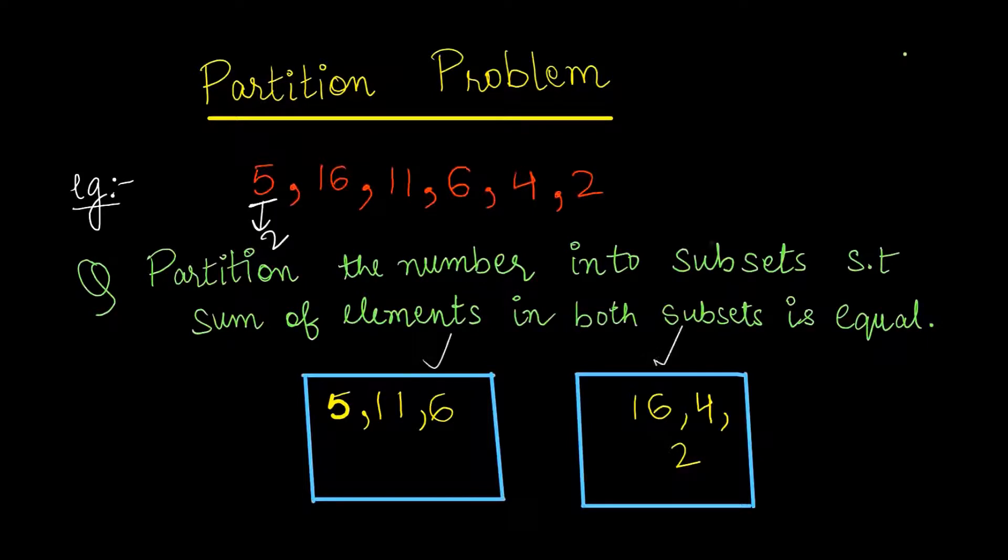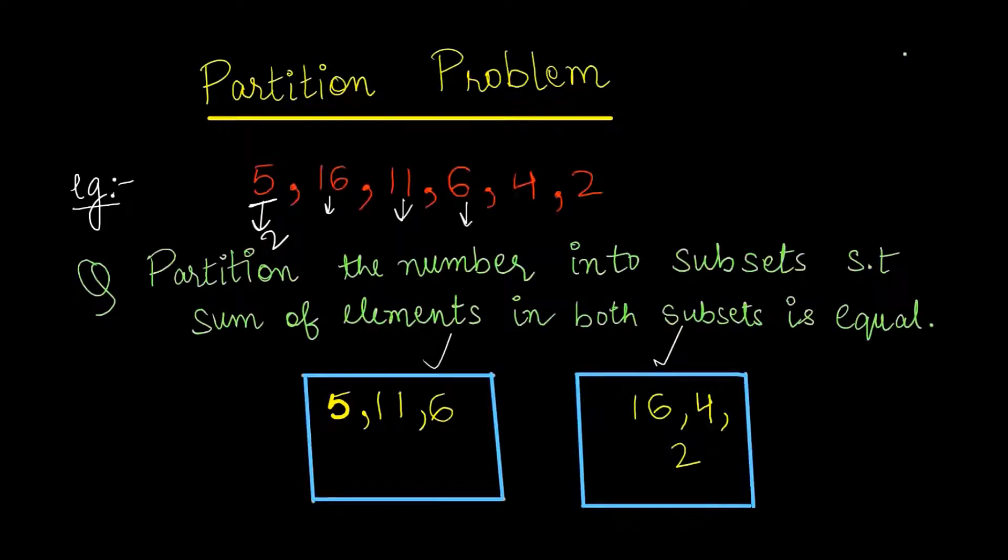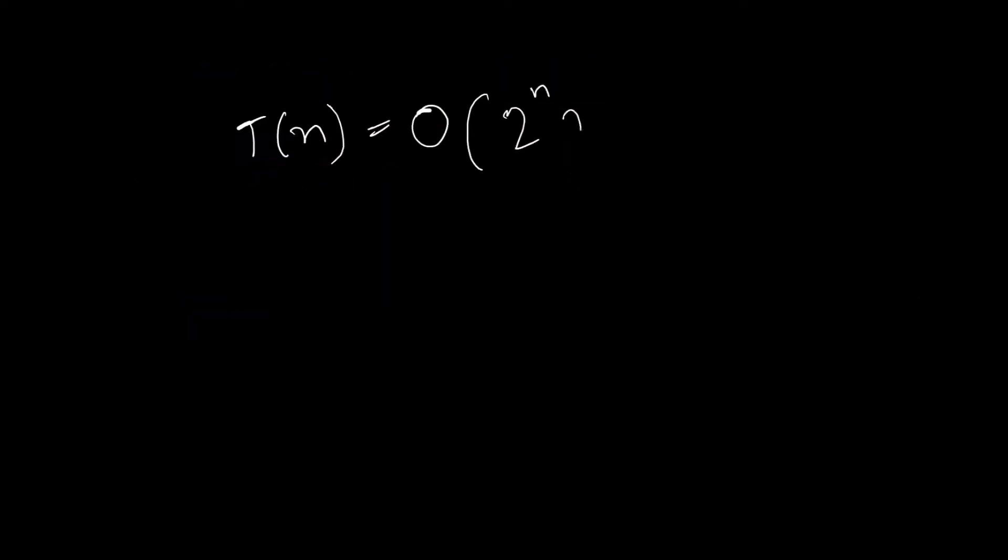Same with 16, then 11, then 6. That is, all the numbers have two choices. So here I can write order of 2 to the power n, and I am going on each of the numbers, so it will be n. That means the time complexity will be order of n to the power n.